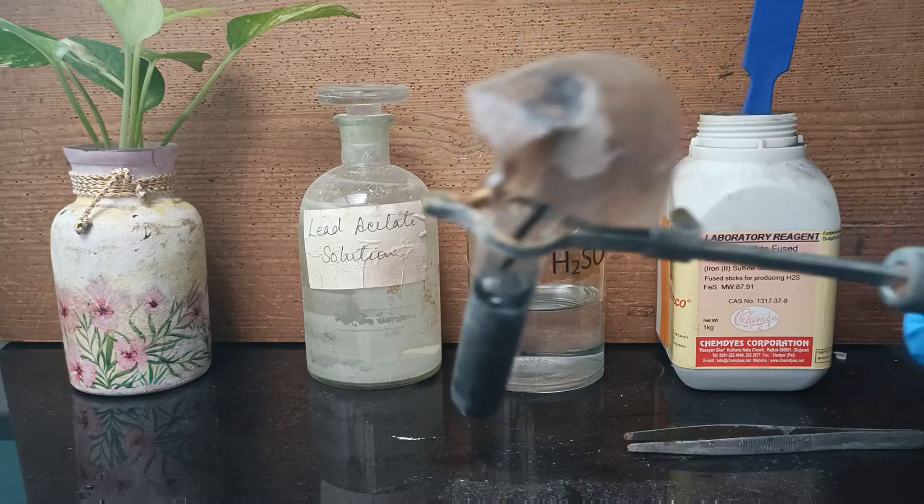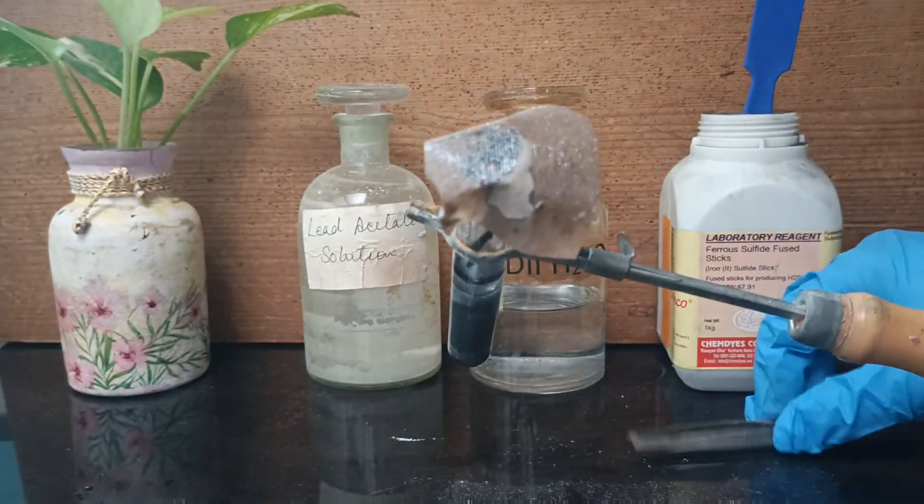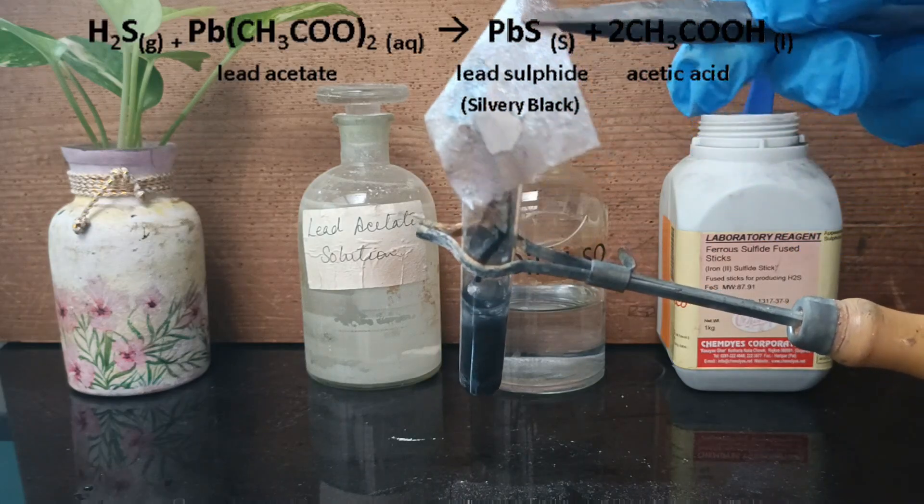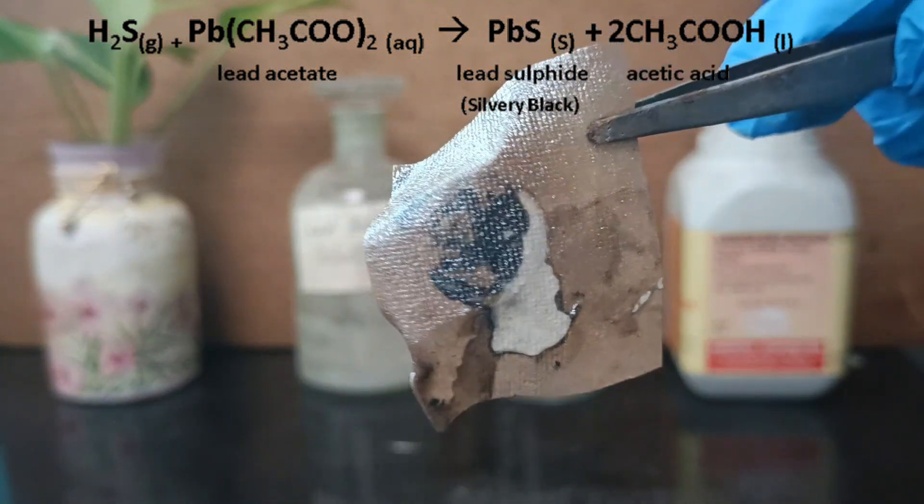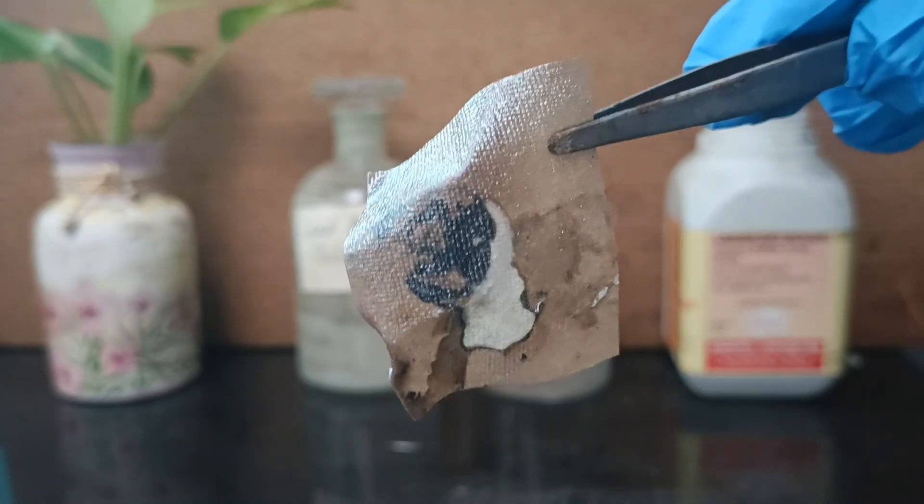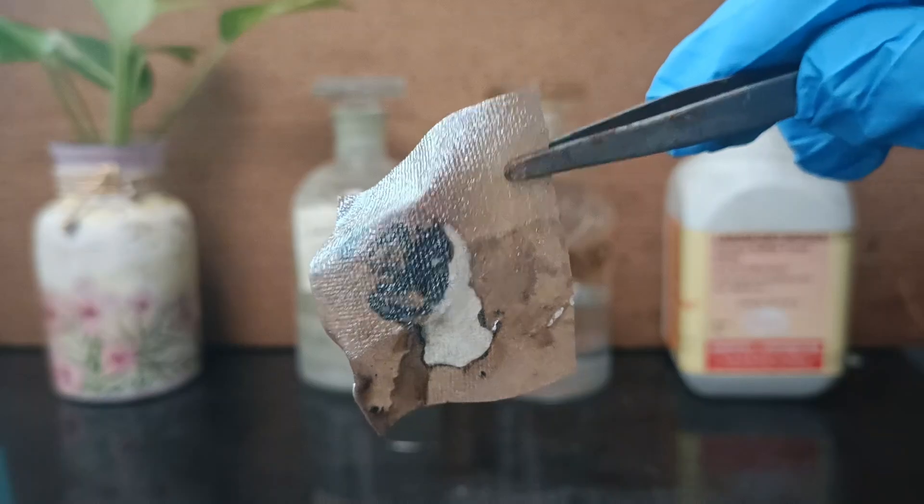In about three to four minutes, the lead acetate paper becomes silvery black. This happens because the lead acetate reacts with hydrogen sulfide gas to form lead sulfide, which is silver black in color. This confirms the presence of sulfide iron.